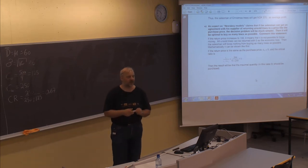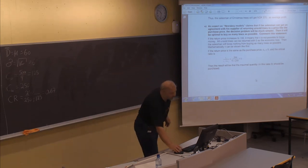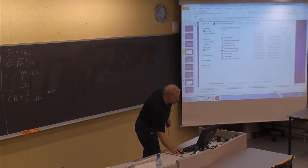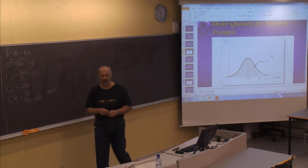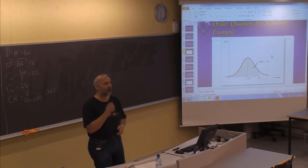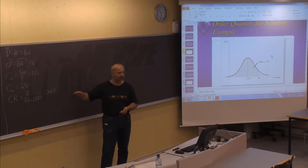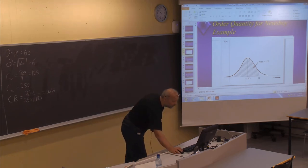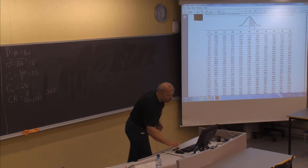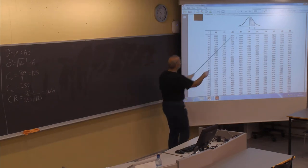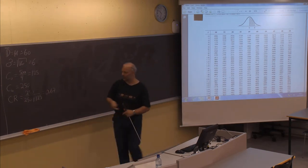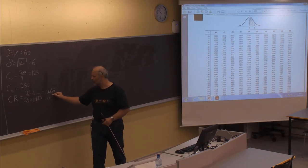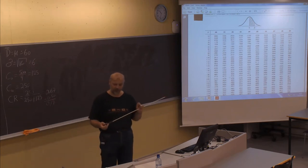Since we have a normal distribution rather than discrete demand, we look for this value in the normal distribution table (Table A1 in the textbook). Since 50% of the distribution is to the left of the expected demand, we are looking for a value of 0.17 above that 50% threshold — that is, the number we need to find in the table.